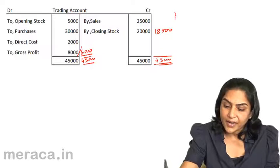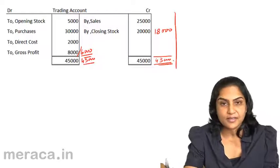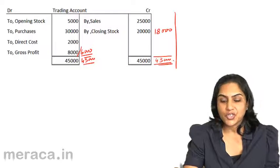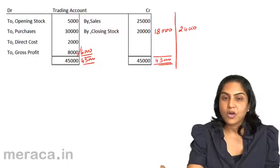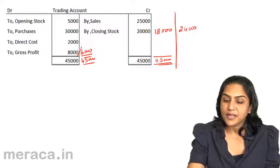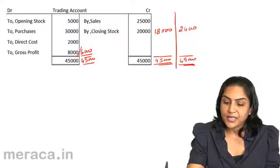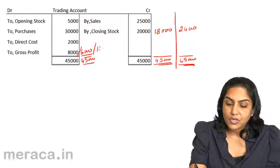But on the other hand, if we were to increase the value assigned to the closing stock and make it 24,000, all other things remaining the same, we would get a gross profit of 12,000.